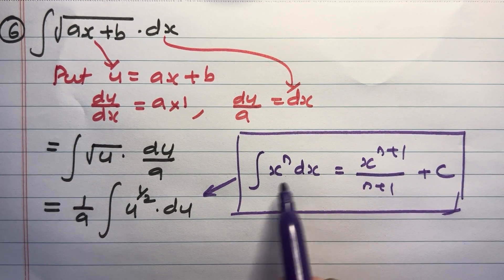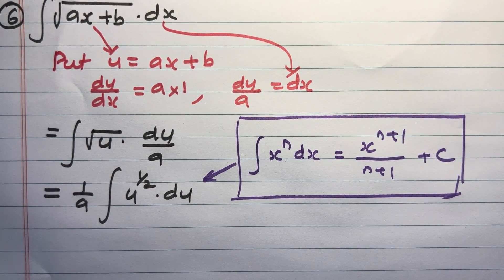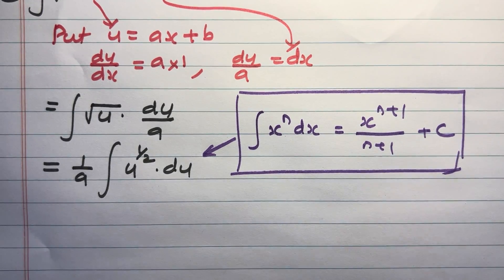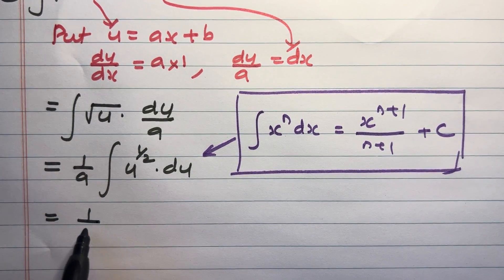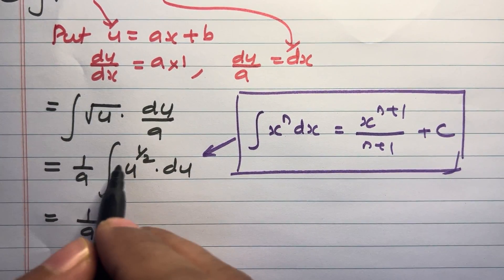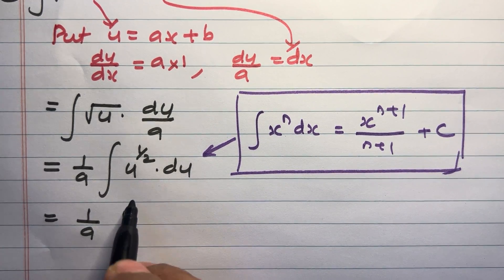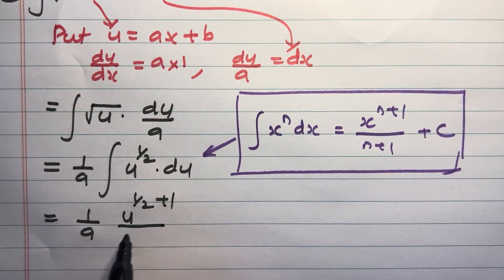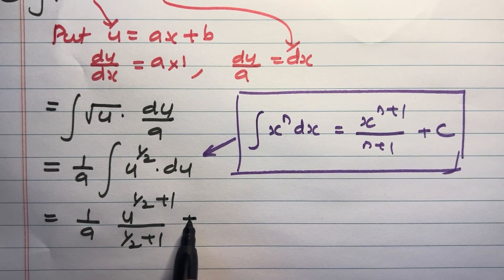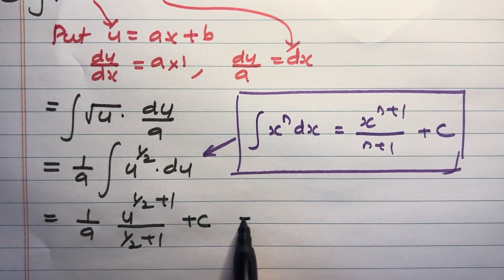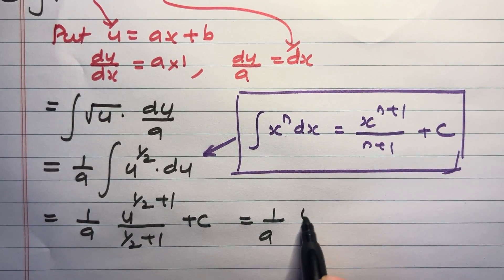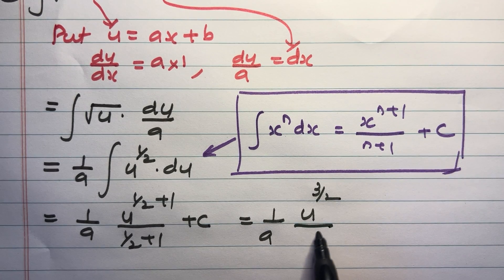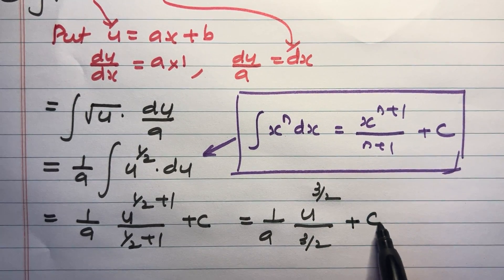The formula is in terms of x; here it is in terms of u. So the answer becomes 1 by a times u raised to 1 by 2 plus 1, divided by 1 by 2 plus 1, plus c. That is 1 by a times u raised to 3 by 2, divided by 3 by 2, plus c.